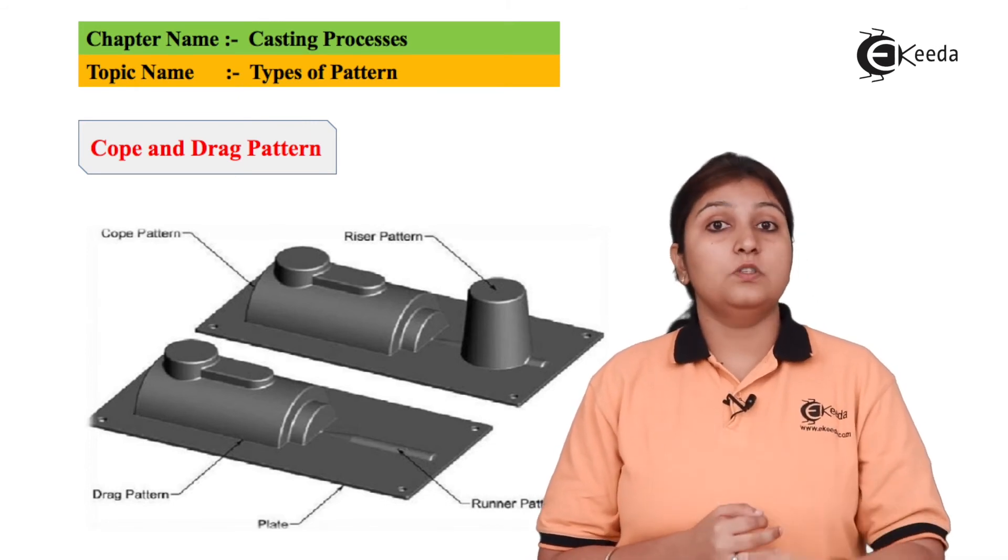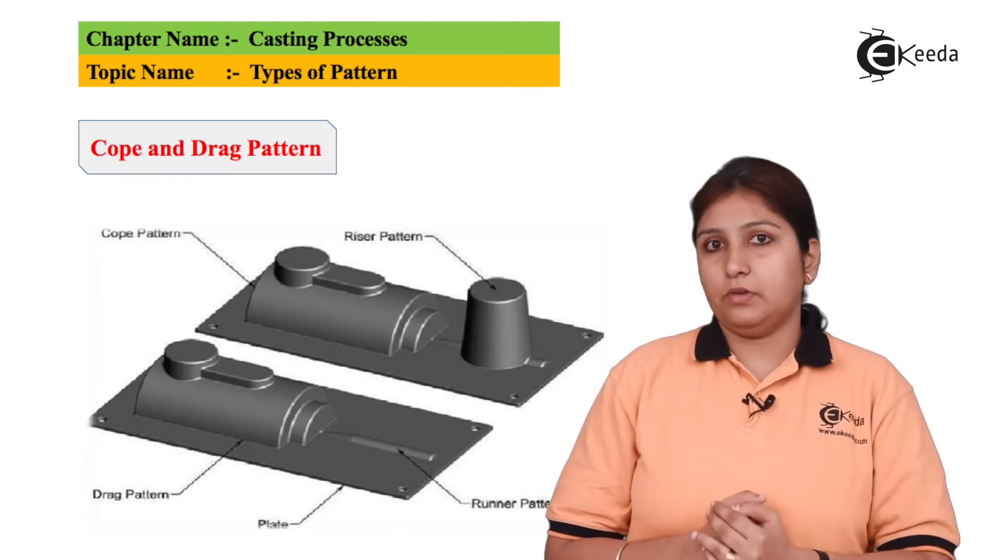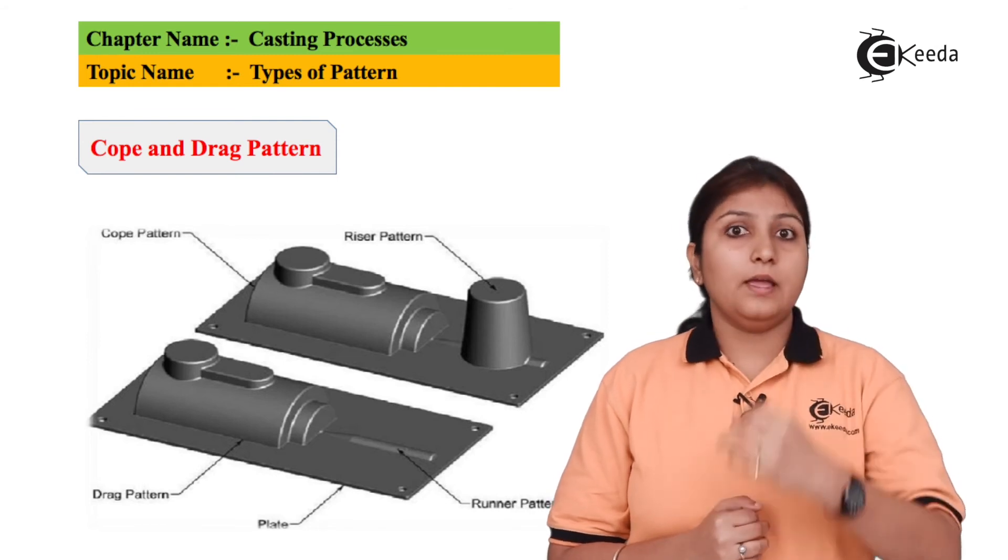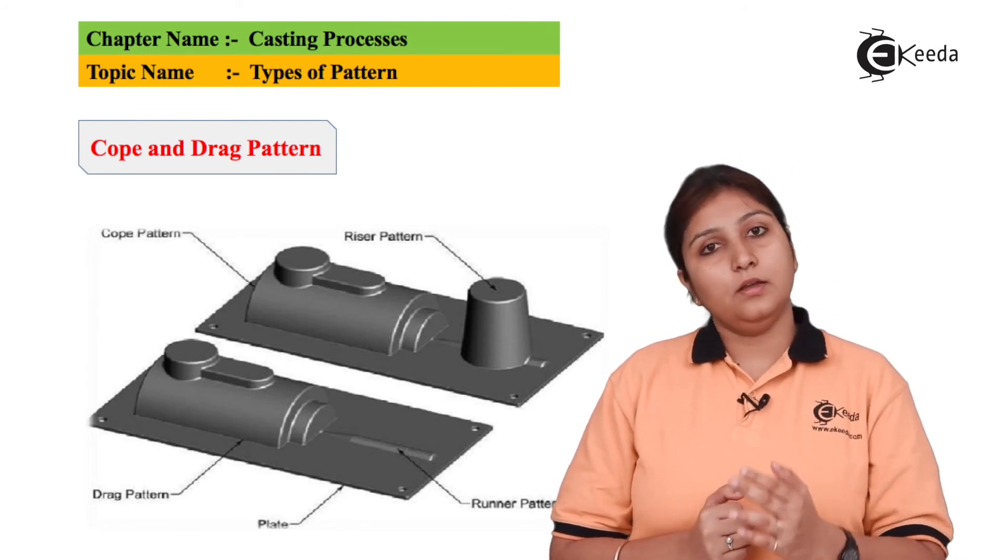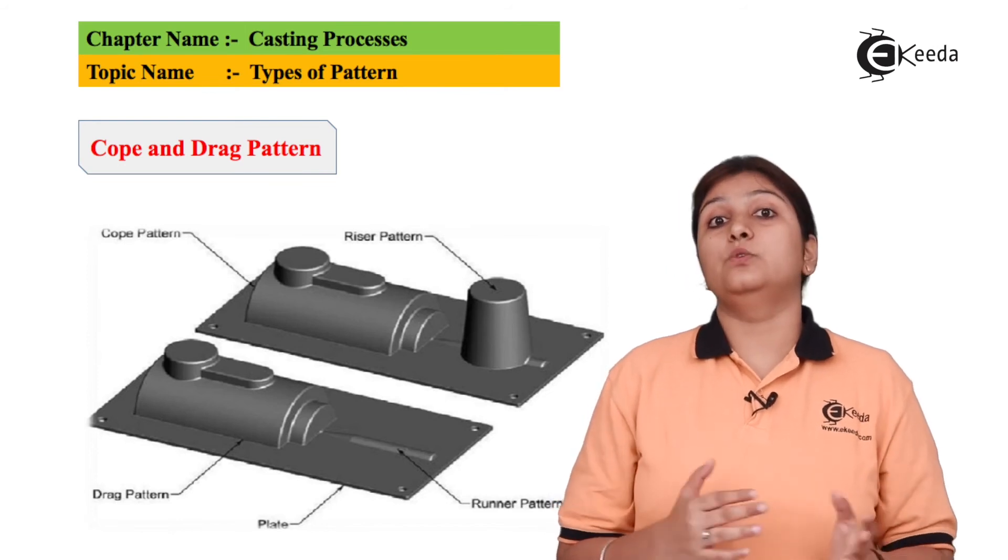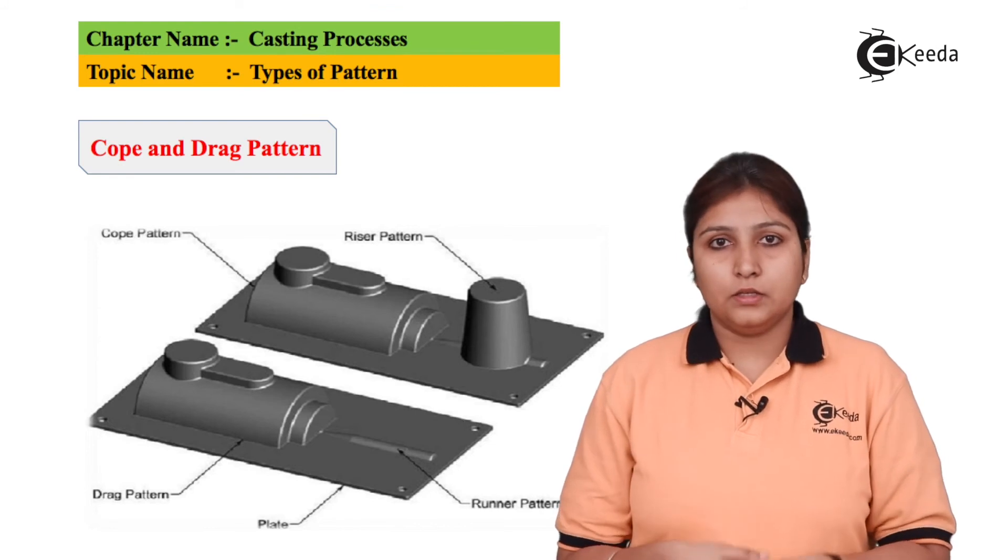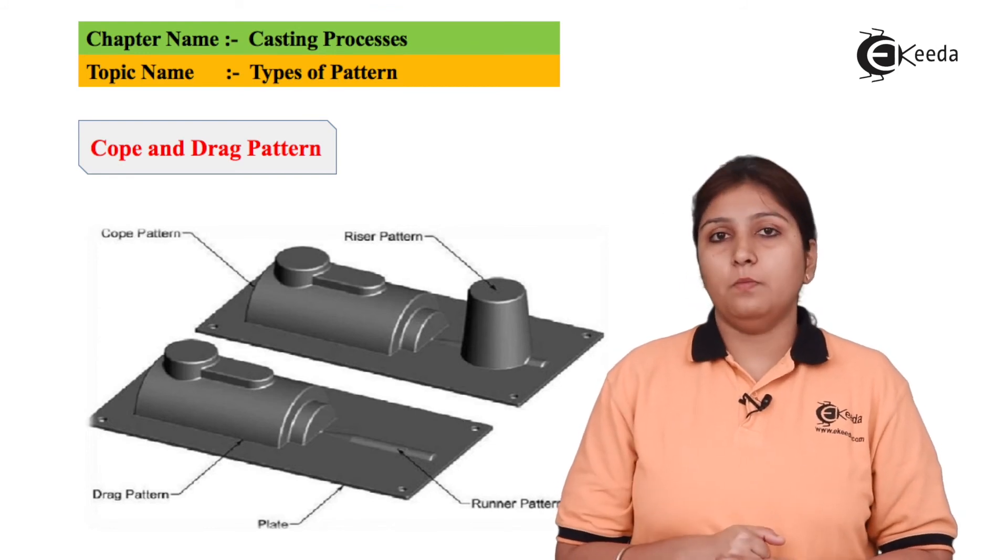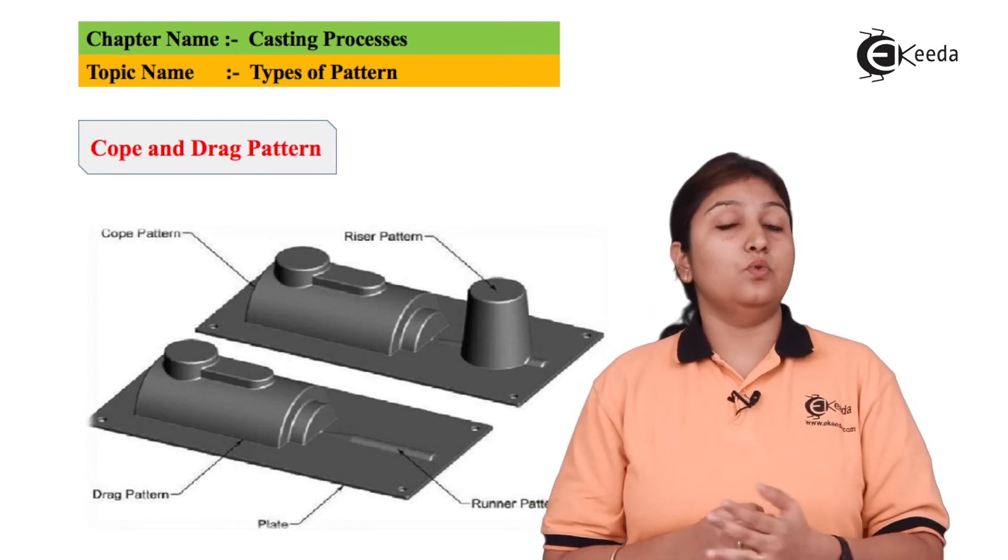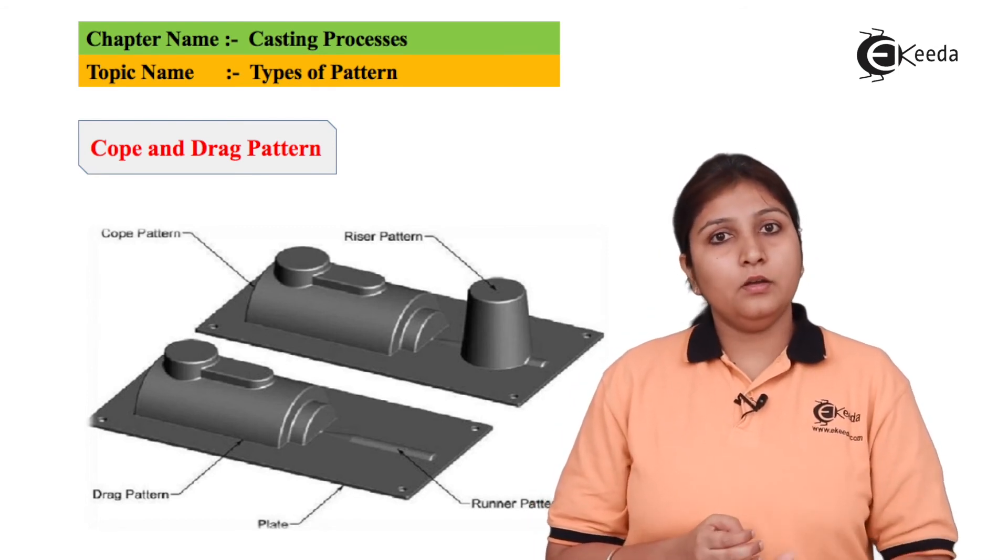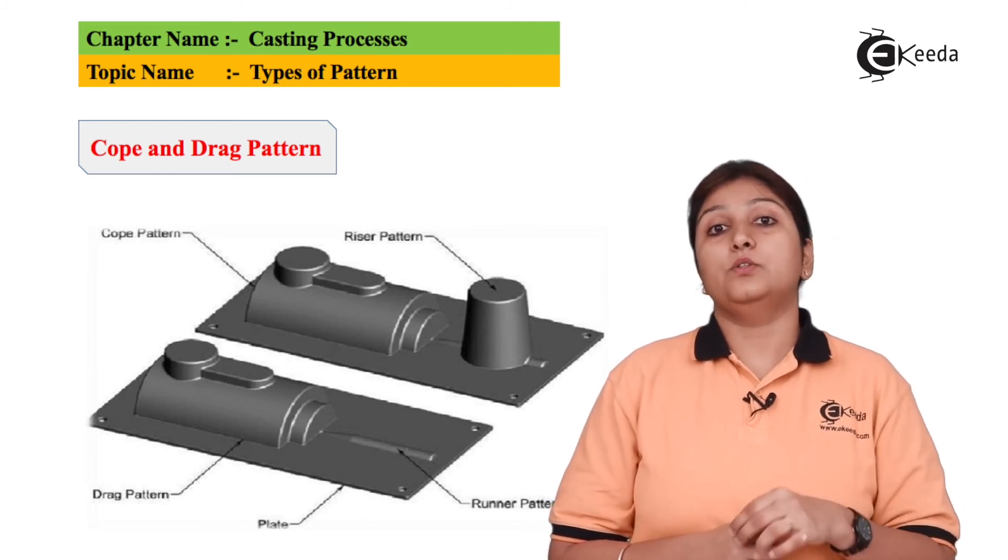There is a riser. Riser has its own specification, if at all, the material in the cavity is less. So the riser helps in pouring additional material in your cavity so that it helps. Basically, it helps during solidification. When the material solidifies, it starts shrinking. So riser adds additional element. It is the basic use of riser. And there is a runner. Runner has its own speciality.